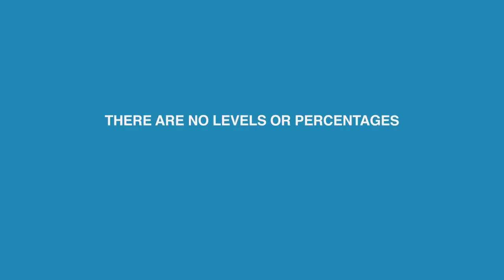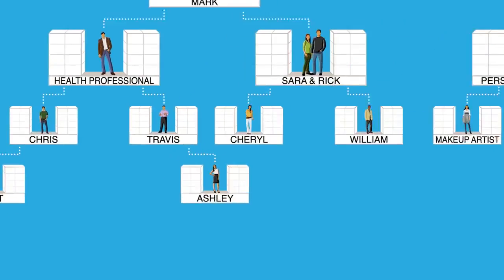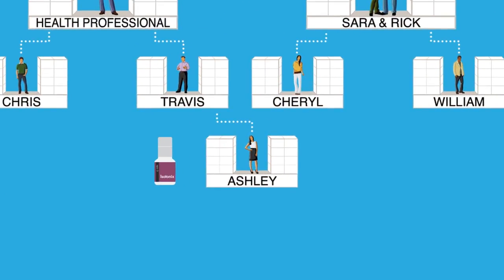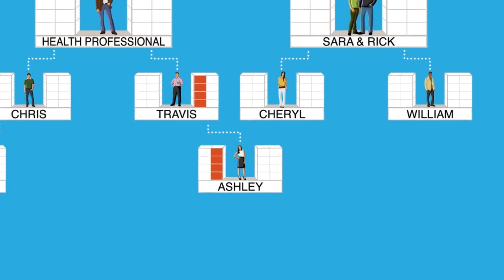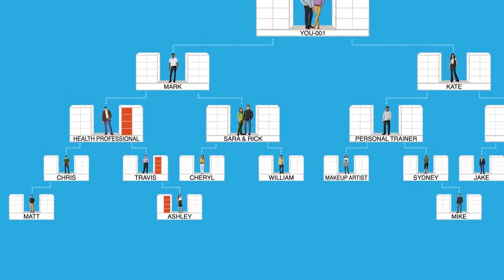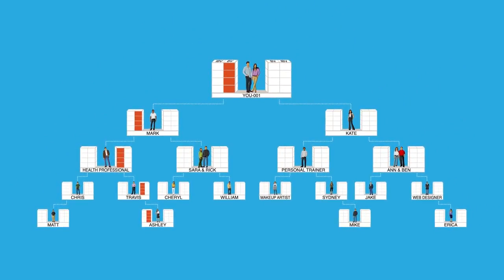Consider the fact that there are no levels or percentages — you will receive 100% credit of the volume created within your organization. For example, Ashley orders products for her own personal use, or a customer orders products from her shop.com site. The BV created from the transaction is credited to Ashley. Furthermore, the BV is not only credited to Ashley, but will continue to flow upward and be 100% credited to each qualified unfranchised owner, including yourself.